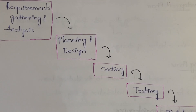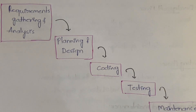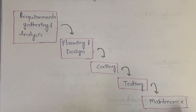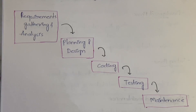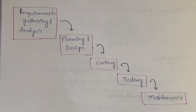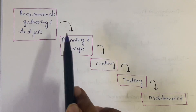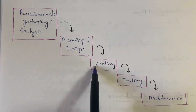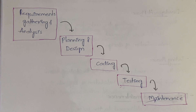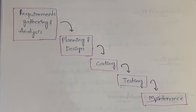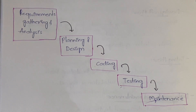Now let us see the diagram which represents the Waterfall Model — let me zoom in a bit. This is the diagram of the Waterfall Model, starting from requirements gathering to maintenance. The phases are: requirements gathering and analysis, planning and design, coding, testing, and maintenance — five stages in this diagram. In some textbooks you may see six or seven, as the design can vary.